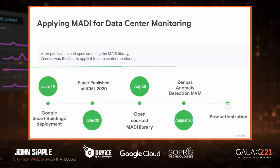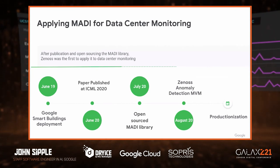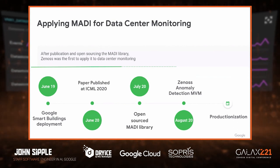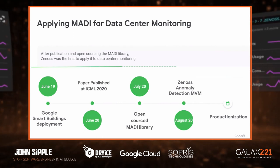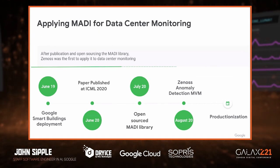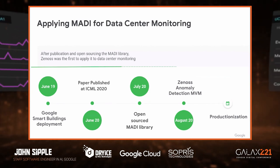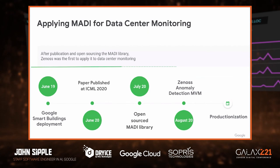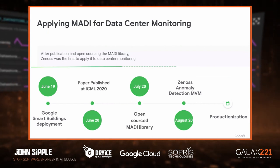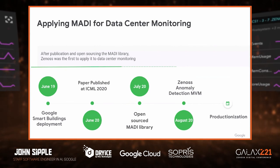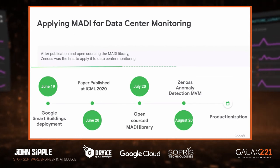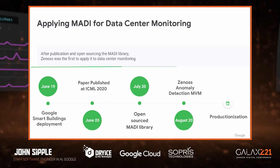We've open-sourced MADI, our library. In June 2019 we deployed the first version in smart buildings, then generalized it into a broader general-purpose library. We presented it at the International Conference of Machine Learning last year, then open-sourced the MADI library for the greater community to use anomaly detection with interpretability. In August 2020, we created a proof-of-concept adapting interpretable anomaly detection for data centers. That proof-of-concept was successful, and now we're in the productionization phase of MADI for data centers with Xenos.